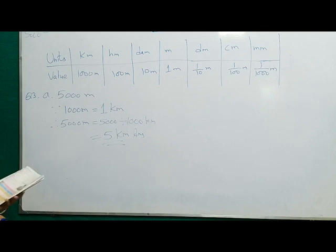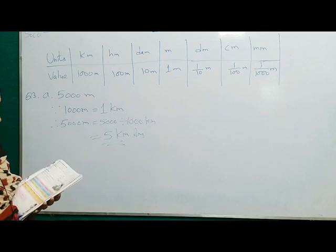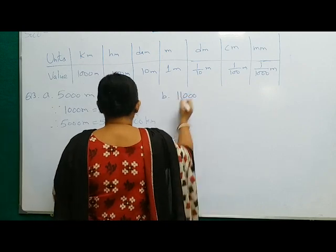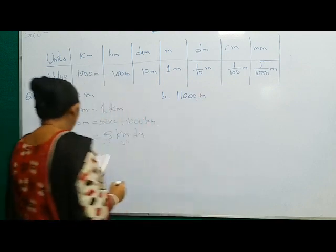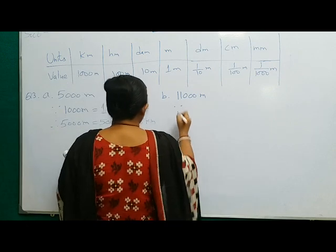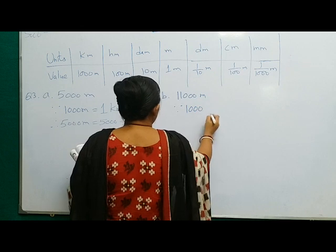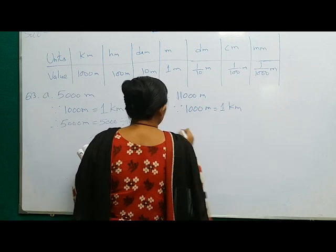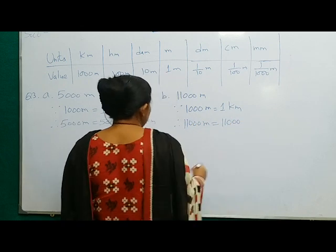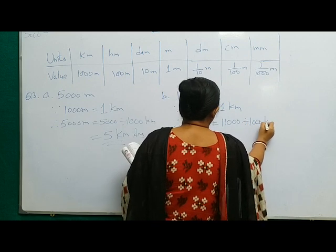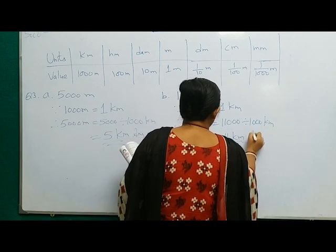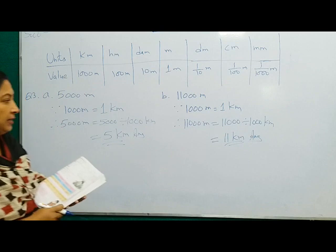Now you do number B. Number B is given 11000 meters. You have to convert this 11000 meters into kilometers. Since 1000 meters is equal to 1 kilometer, therefore 11000 meters is equal to 11000 divided by 1000 kilometers. Three zeros will be cancelled and only 11 will be left. This is the answer for number B, that is 11 kilometers.